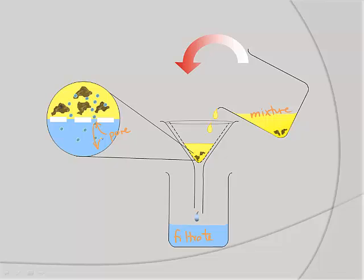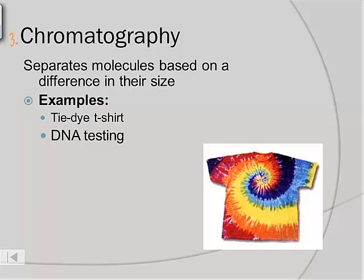The third method we're going to look at is chromatography. Chromatography separates molecules based on a difference in their molecular size or their affinity for what we'll call in a minute a stationary phase. This really is only useful for small samples, so you would not want to take a liter of mixture and separate it by chromatography.